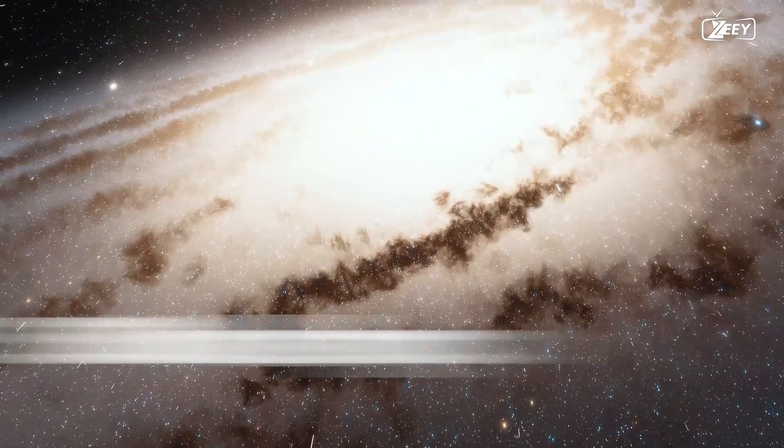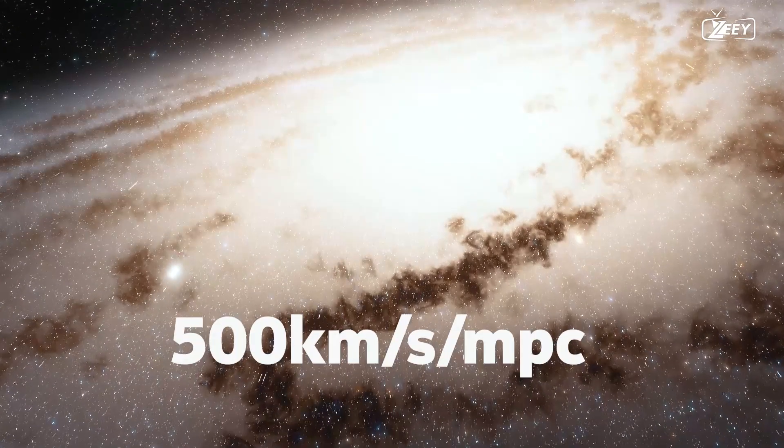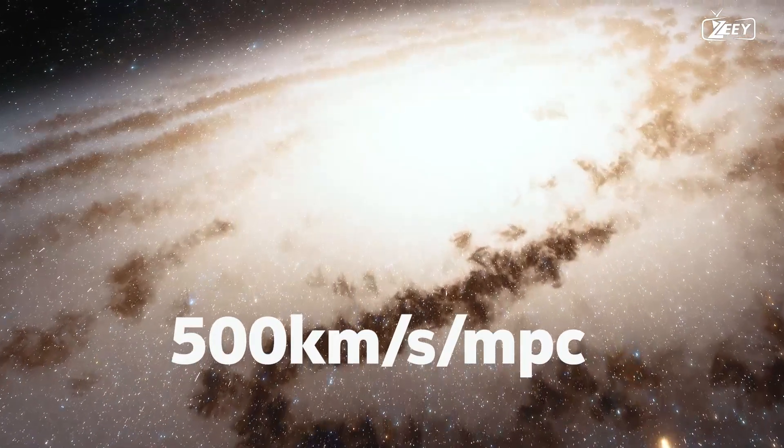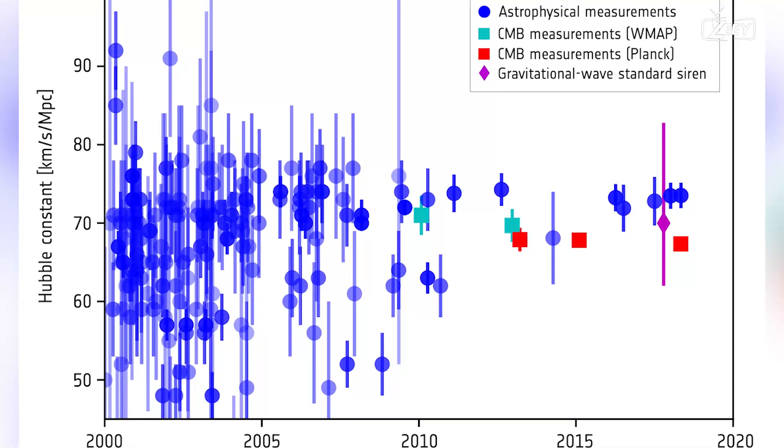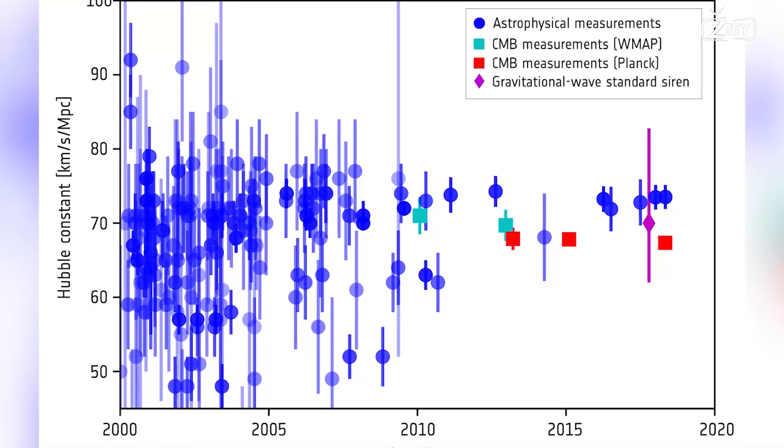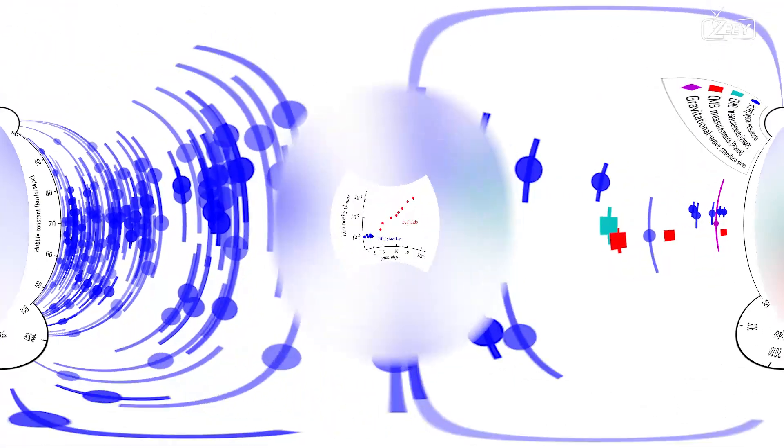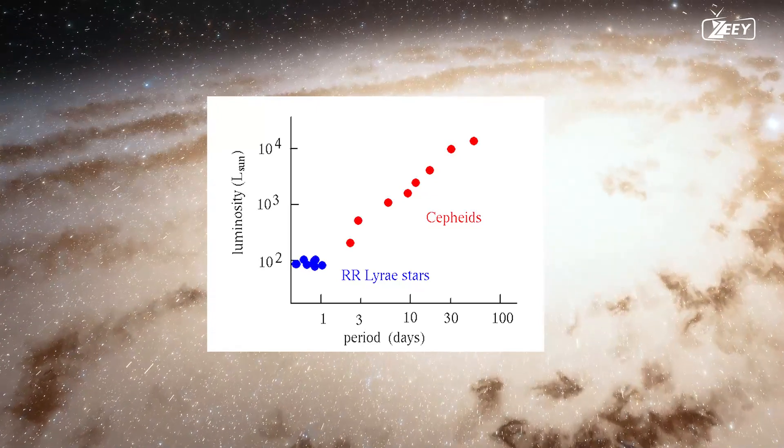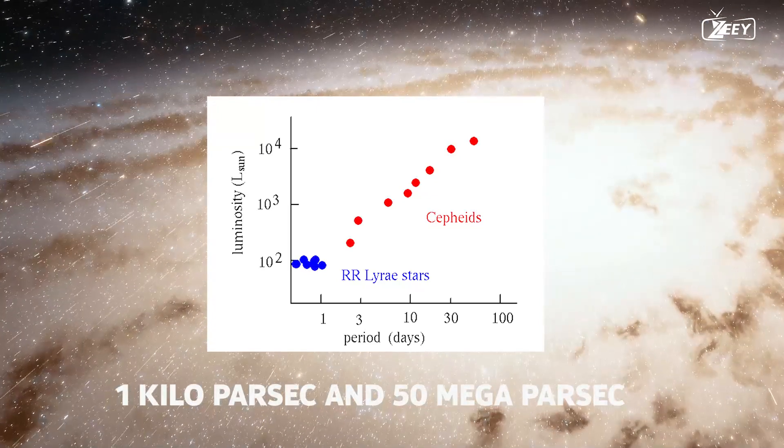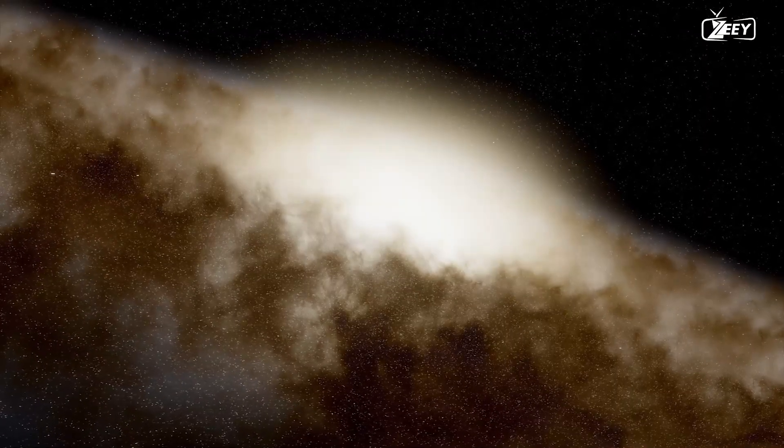Edwin Hubble calculated the Hubble constant to be 500 km per second per megaparsec, or around seven times what astronomers believe it to be now. This figure was obtained by plotting the variance between the distance and recessional velocity for 46 galaxies. Cepheids, however, are limited to measuring distances between approximately 1 kiloparsec and 50 megaparsecs. What about distances beyond this range then?